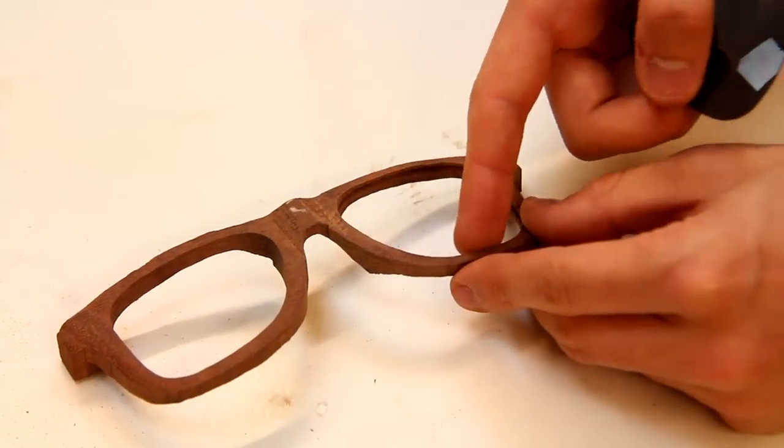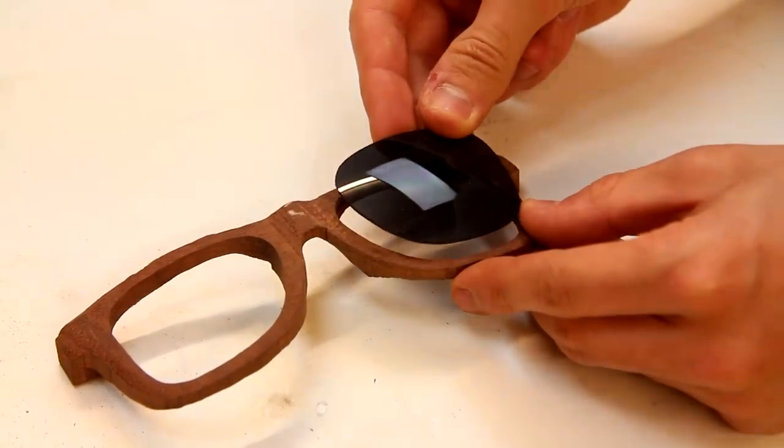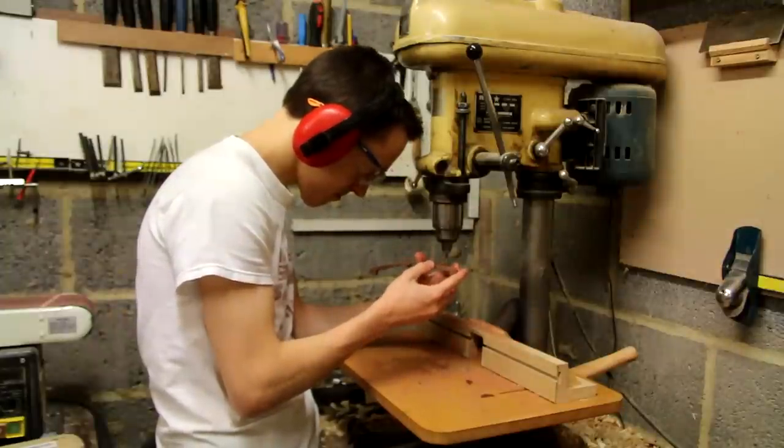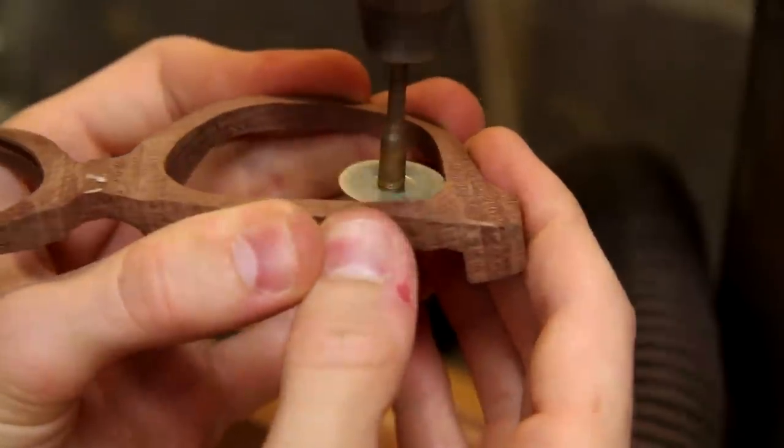I've cut a groove inside the frame to accept the lenses, and so now I've just got to go ahead and do the other side. And to do that I'm using a little rotary tool cutting disc in the drill press.